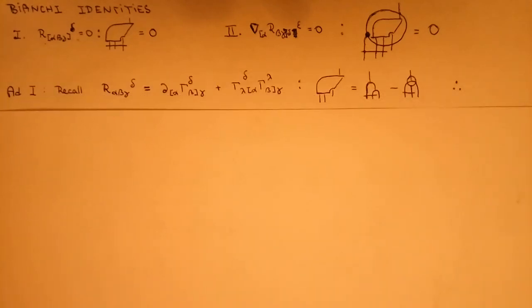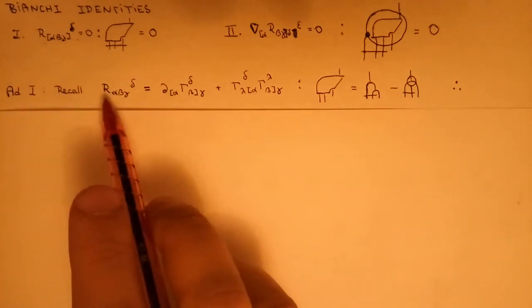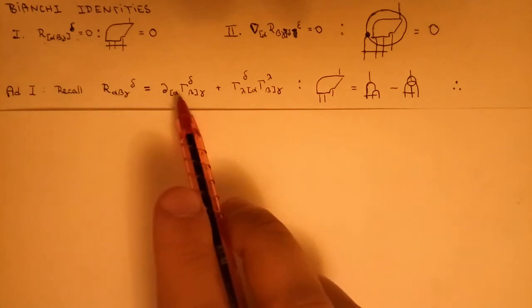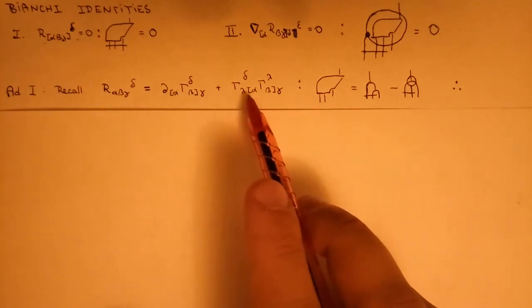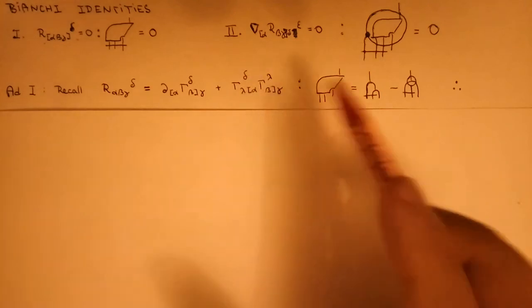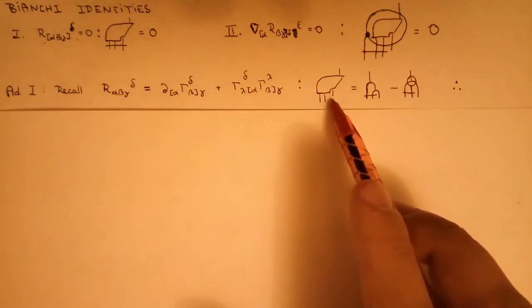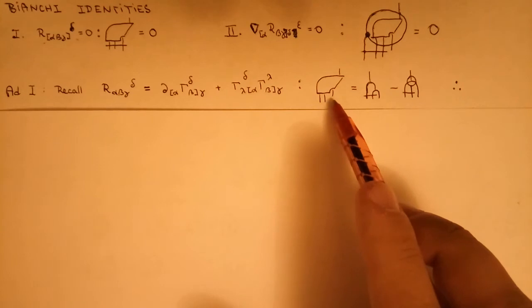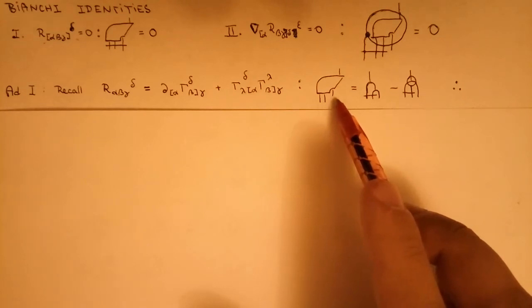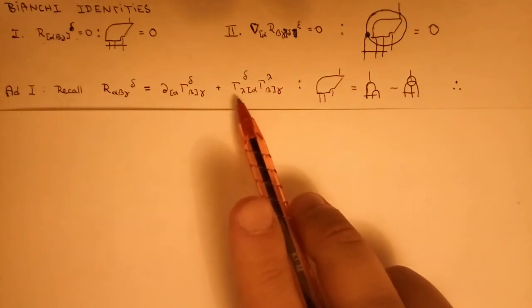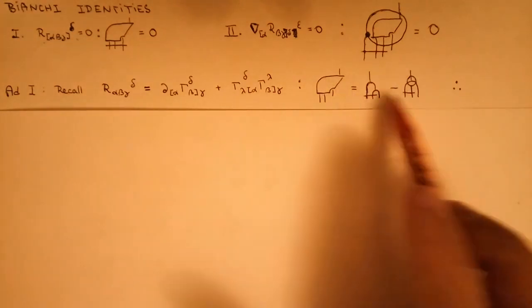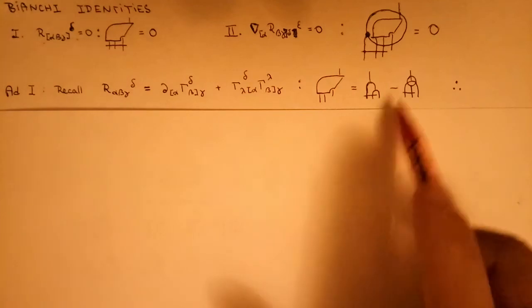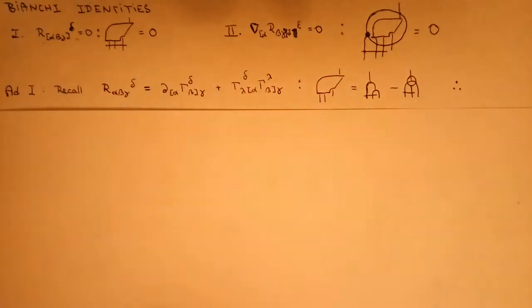The first step is to prove the first Bianchi identity. Recall that the Riemann tensor can be written as the partial derivative of the Christoffel symbol and the contraction of their products. Written in Penrose notation, we get this very fancy-looking identity. This is just a partial derivative.